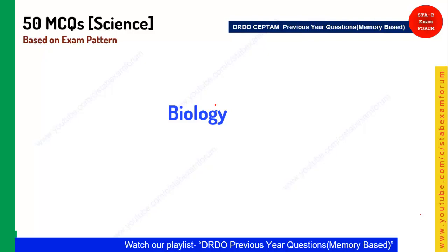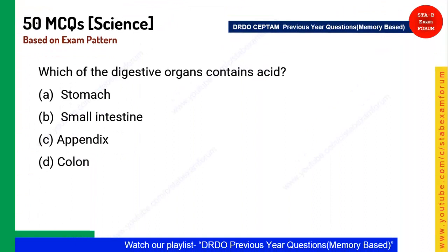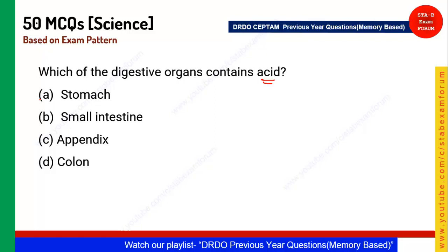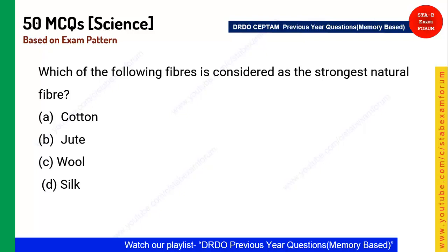First biology question: Which digestive organ contains acid? The answer is the stomach. The stomach contains hydrochloric acid, which breaks food into smaller components.